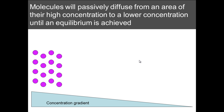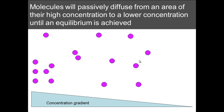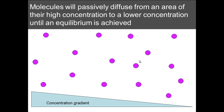Molecules that passively diffuse from an area of high concentration to an area of low concentration — that is referred to as diffusion. Molecules move down a concentration gradient, starting from an area of very high concentration until they are equally spread out. This diagram doesn't take into account the fact that these molecules will still be moving, but they will be evenly distributed.